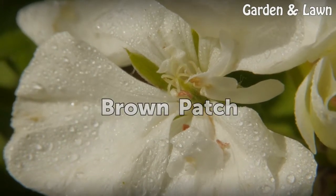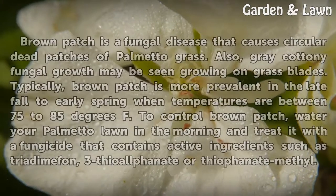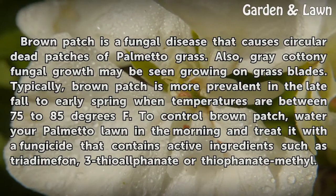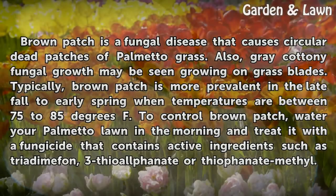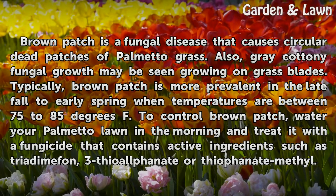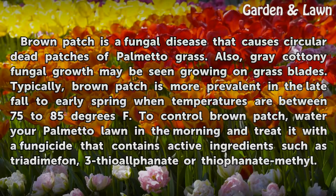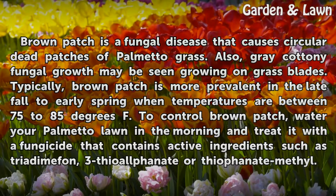Brown Patch is a fungal disease that causes circular dead patches of palmetto grass. Gray cottony fungal growth may also be seen growing on grass blades. Typically, brown patch is more prevalent in the late fall to early spring when temperatures are between 75 to 85 degrees Fahrenheit.